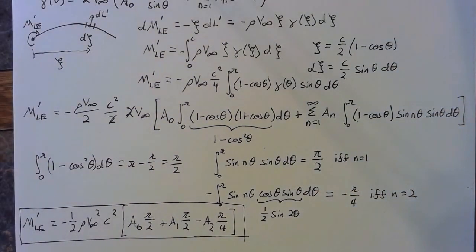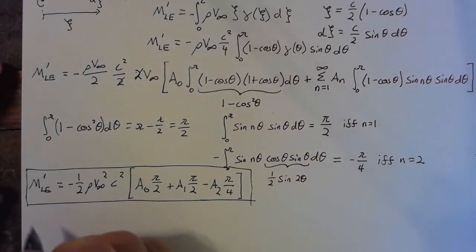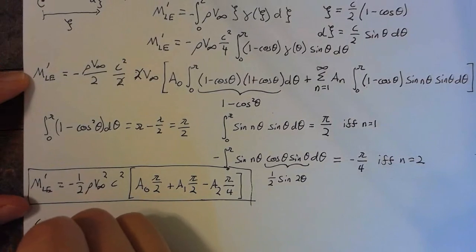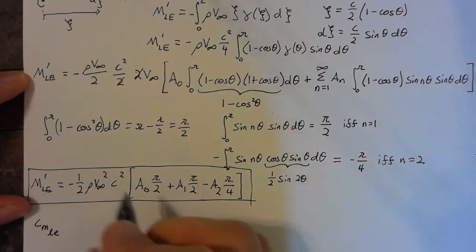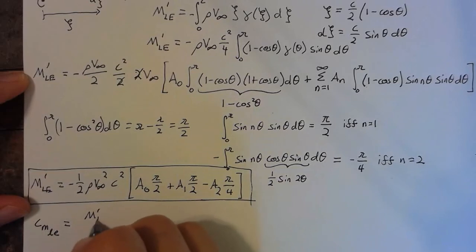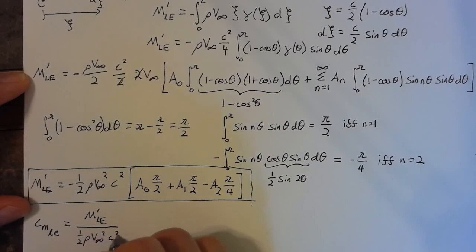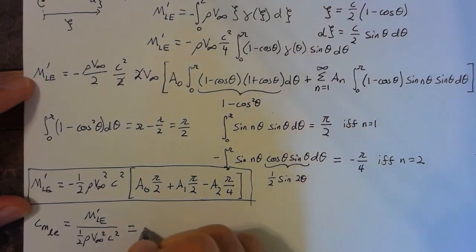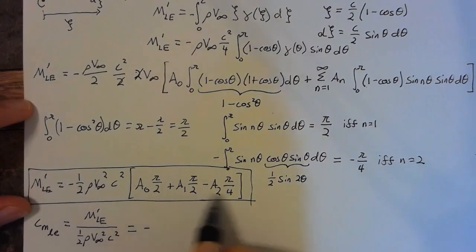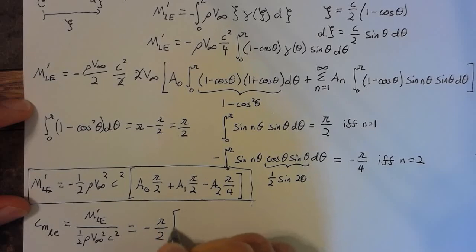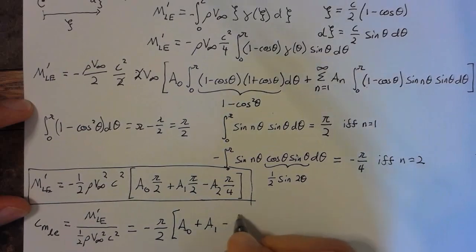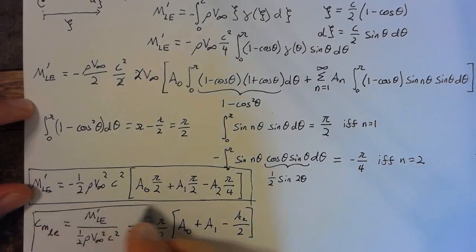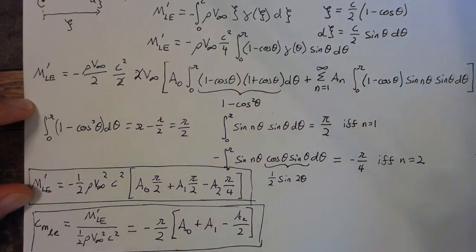We want to look at the coefficient associated with this: the moment coefficient about the leading edge, C_M,LE, equals M′_LE divided by (1/2) ρ V∞² c². This simplifies to negative (π/2) times (A₀ + A₁ − A₂/2). This is exactly the moment coefficient.